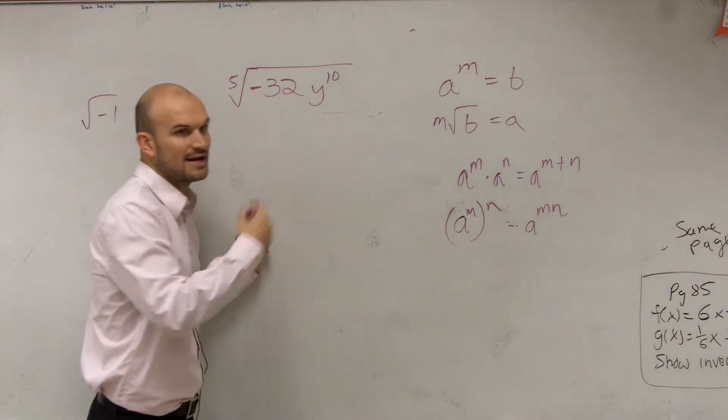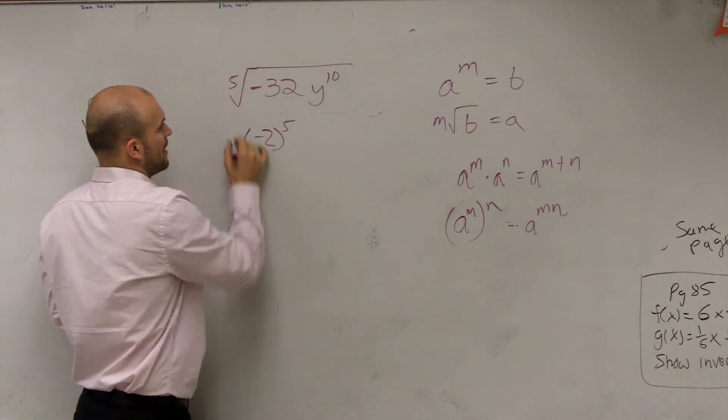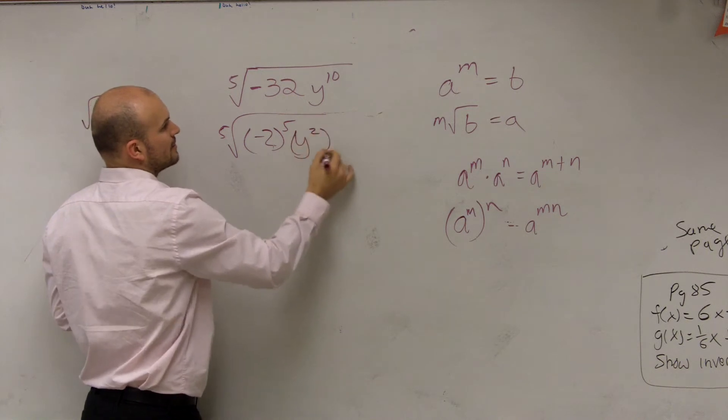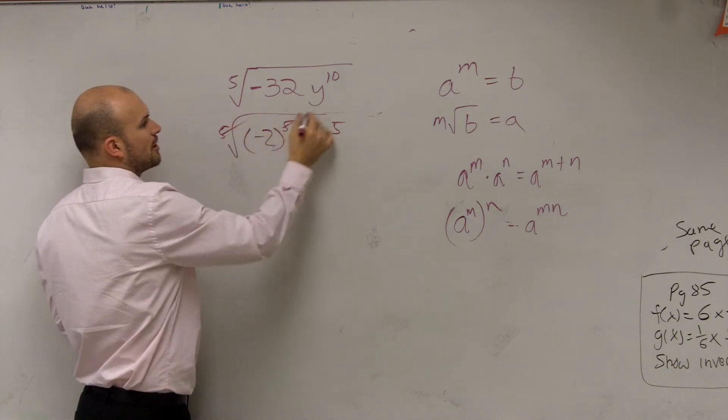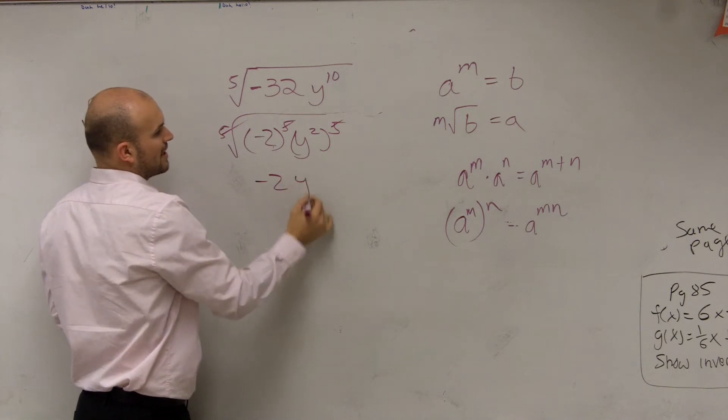So now, instead of our answer being 2, we can write negative 2 to the fifth power. And then we said we rewrote this as y squared to the fifth. Well, now we undo our powers with our roots, and we have negative 2y squared.